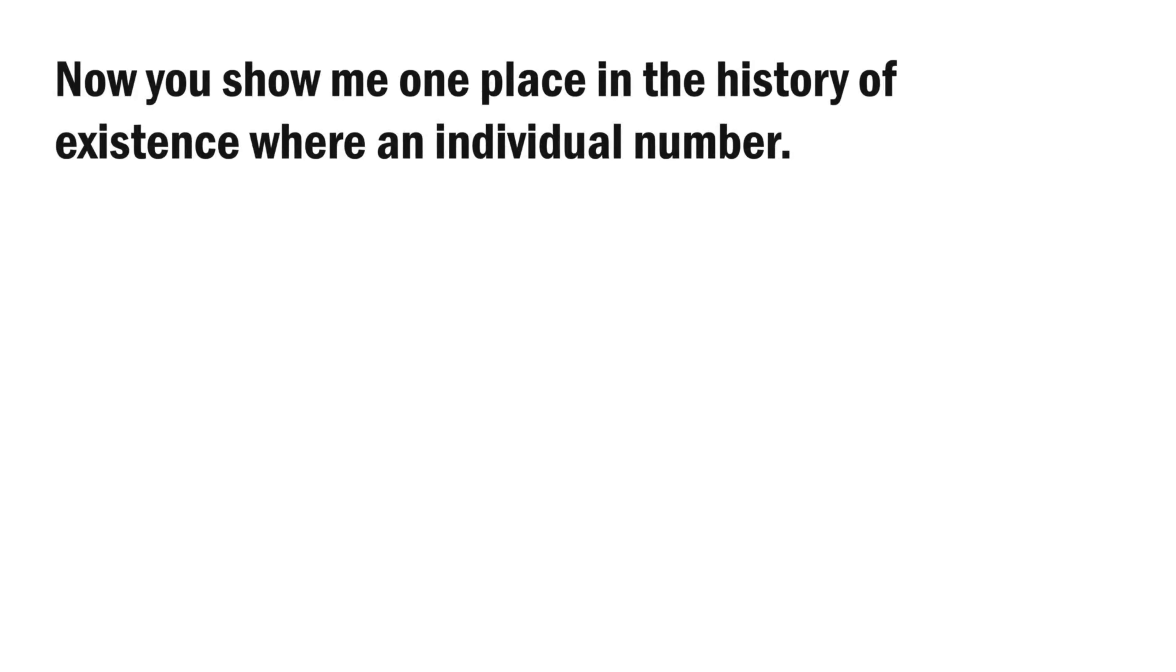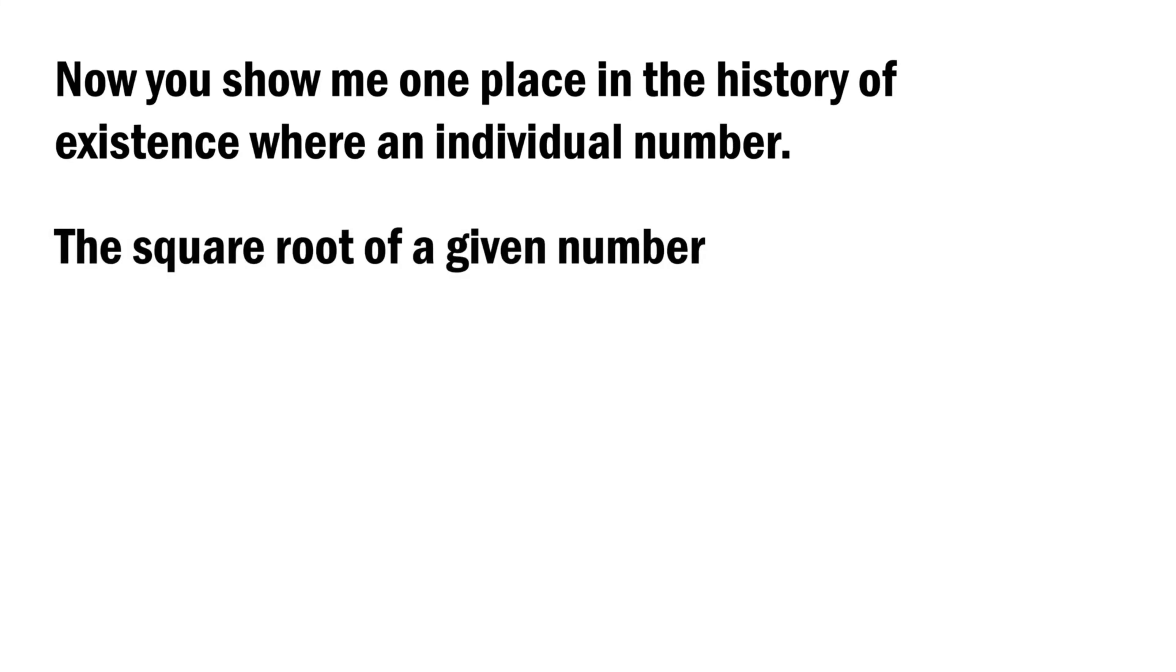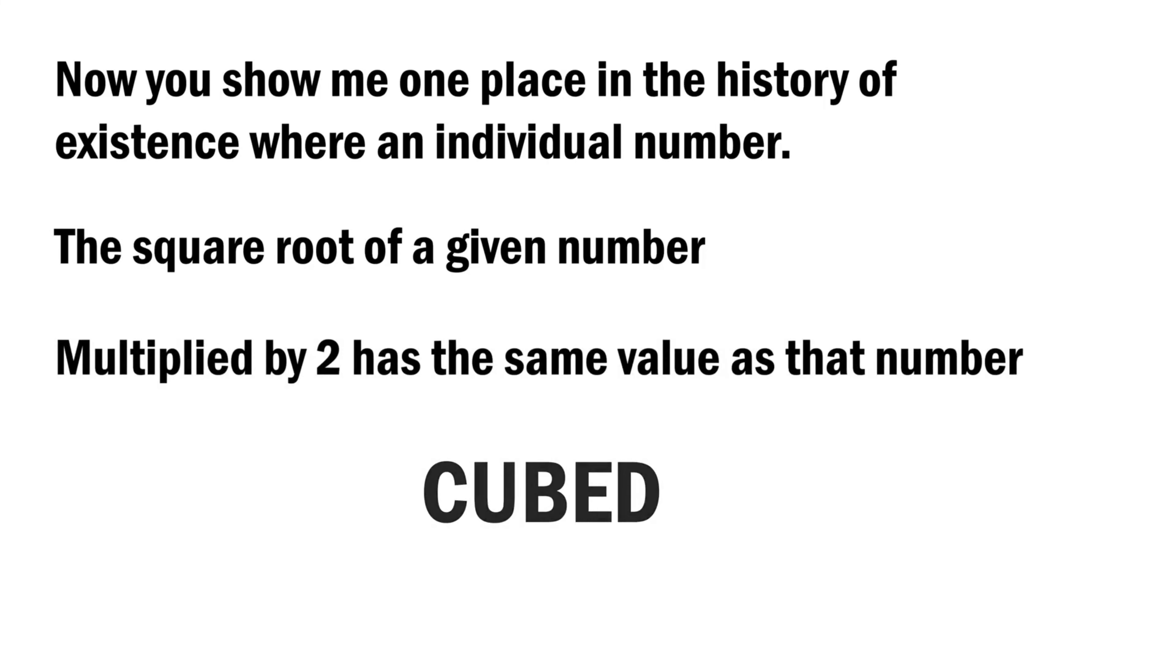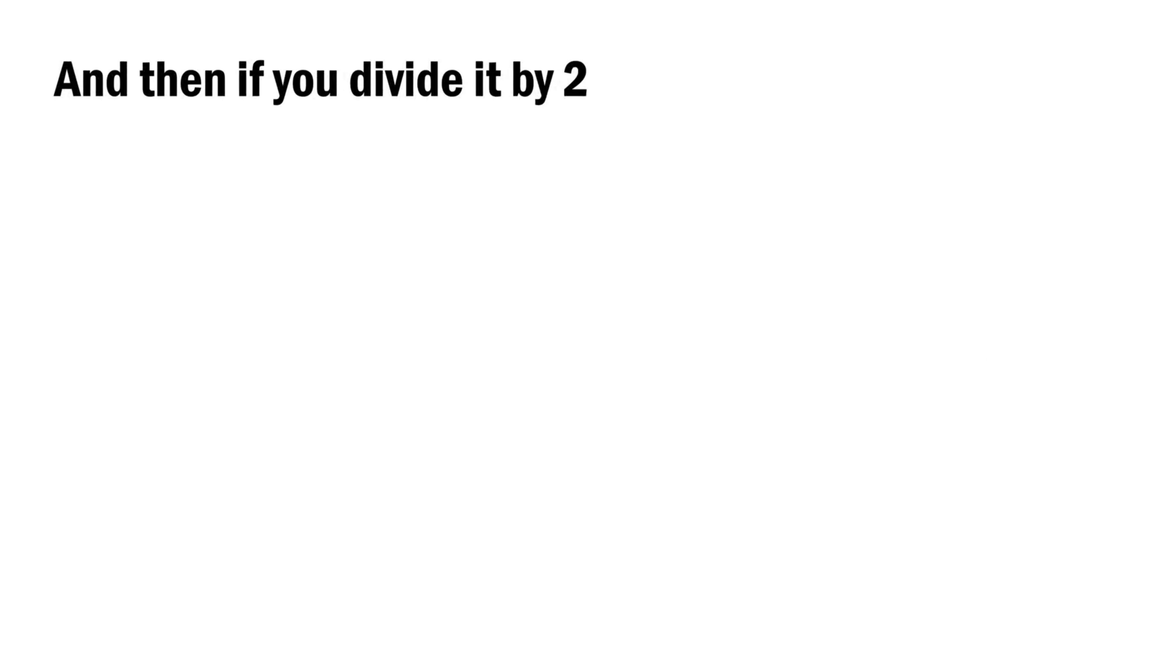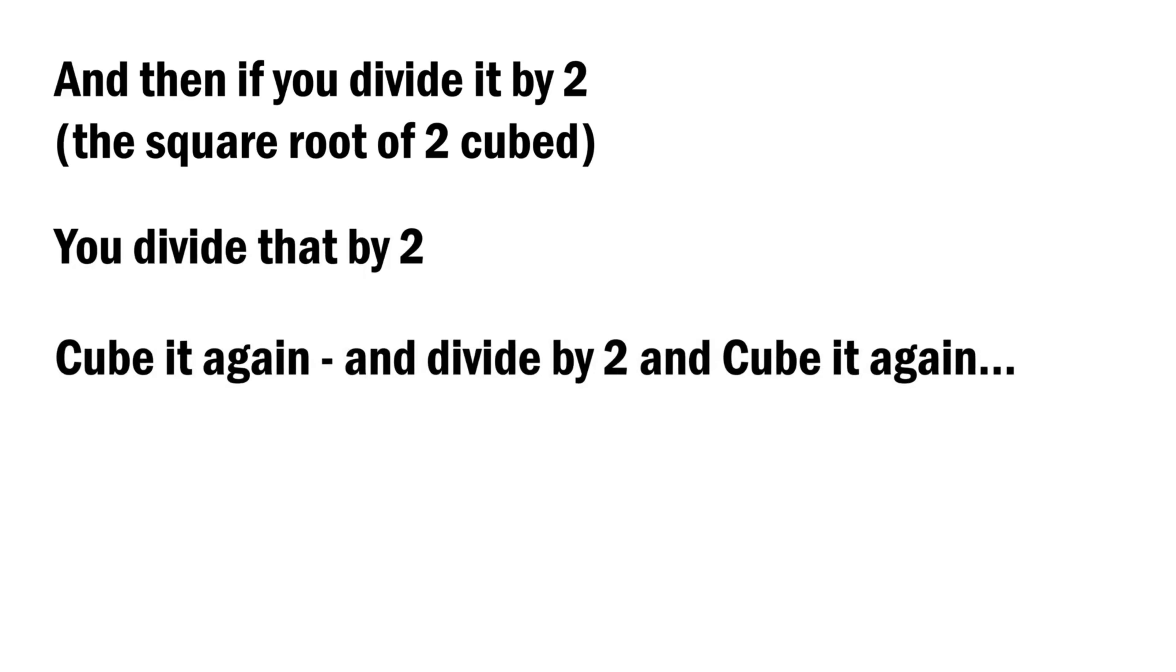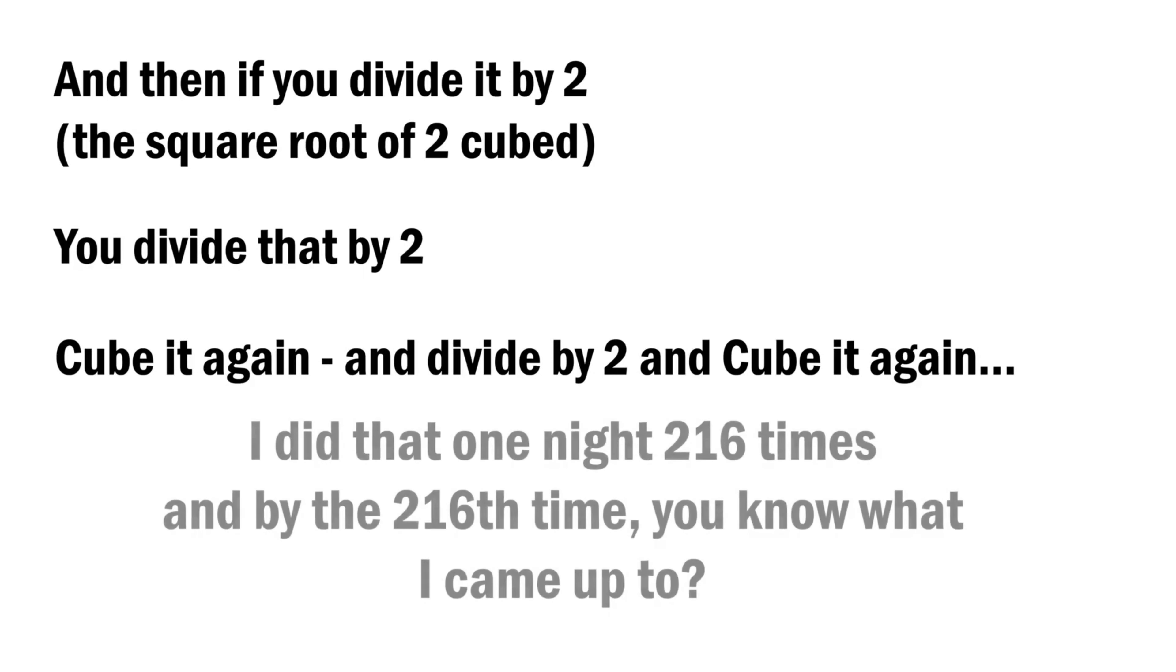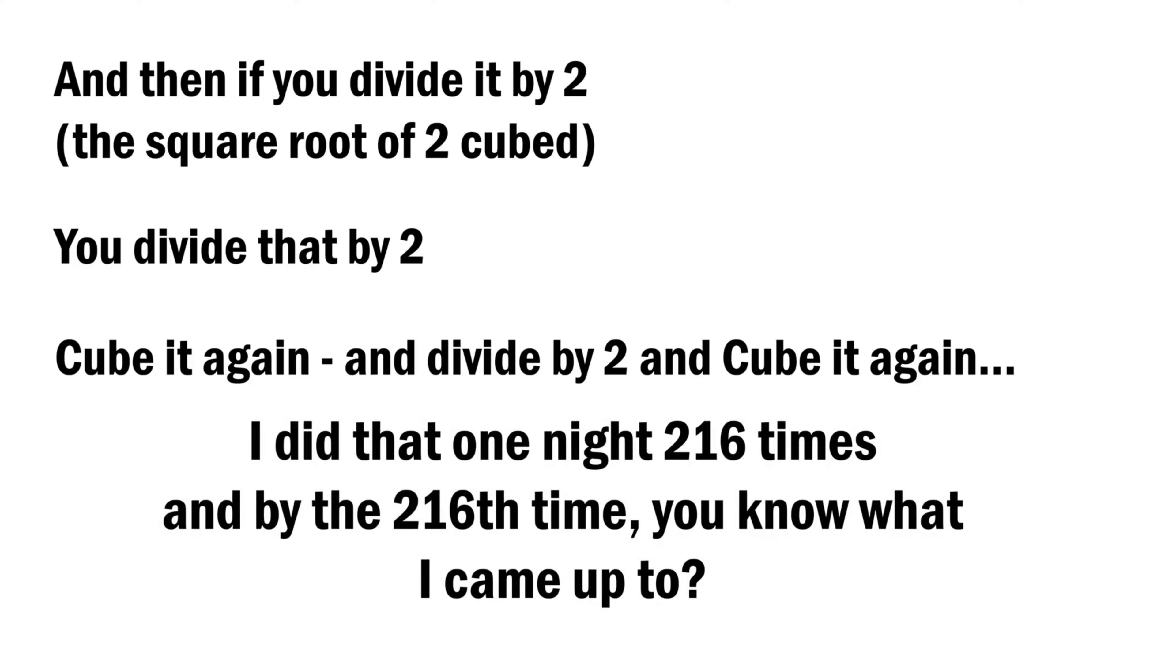Now you show me one place in the history of existence where an individual number, the square root of a given number, multiplied by 2 has the same value as that number cubed. And then if you divide it by 2, the square root of 2 cubed, you divide that by 2, cube it again, and divide by 2, and cube it again. I did that one night 216 times, and by the 216th time, you know what I came up to?